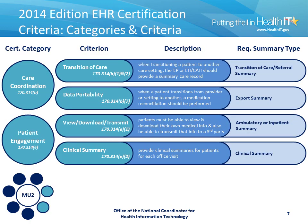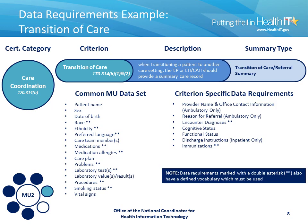Within the care coordination and patient engagement categories, there are five separate criteria that all require the use of the consolidated CDA: both of the transitions of care criteria, the data portability criterion, the view, download, and transmit criterion, as well as the clinical summary criterion. Within each certification criterion associated with the consolidated CDA standard, a summary type is defined. In the case of the transitions of care criterion, there's a transitions of care referral summary defined. These summary types correspond to the unique set of data requirements required within any document pursuing that certification criterion. In many cases, document requirements are a combination of the common MU data set, which is defined in the final rule, as well as criterion-specific data requirements.